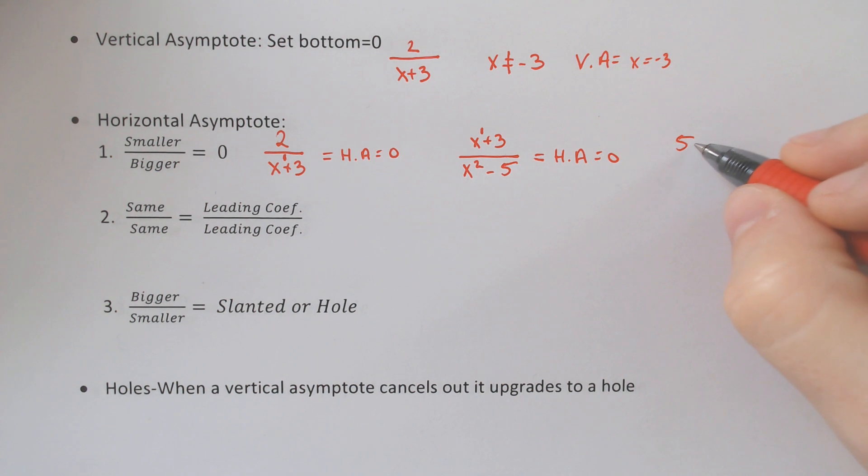Even if it's something that looks like this, where it's 5x over 2x squared, x to the 1st compared to x squared, horizontal asymptote of 0, all right?